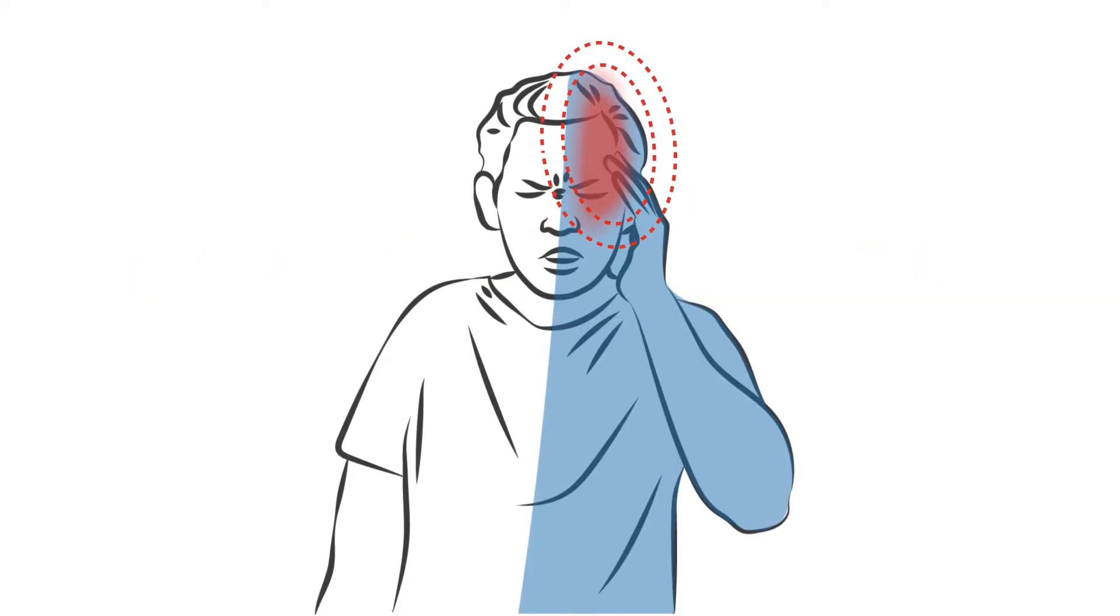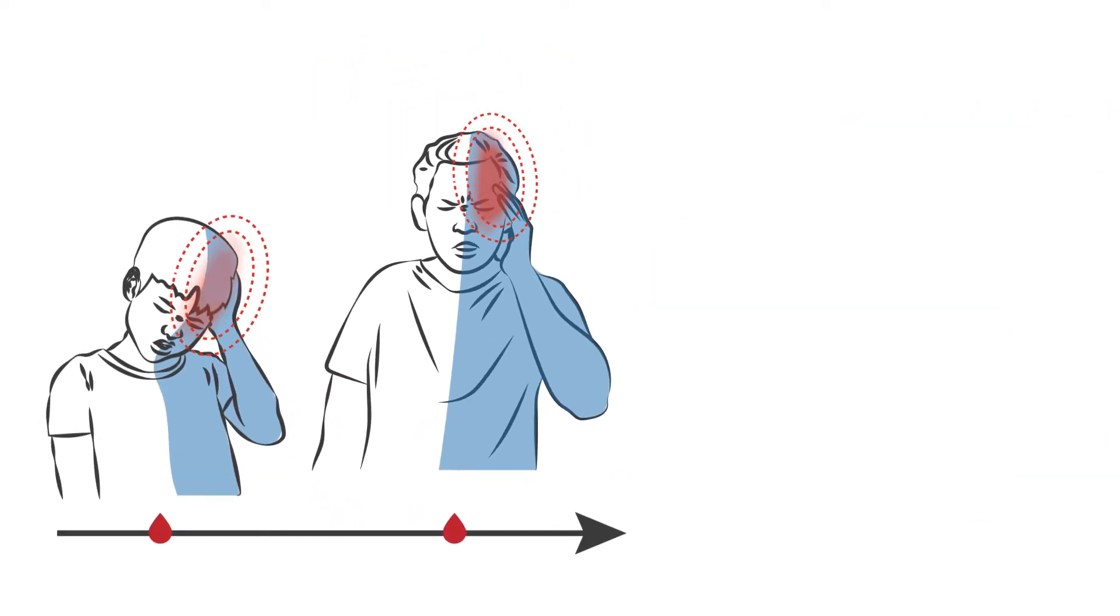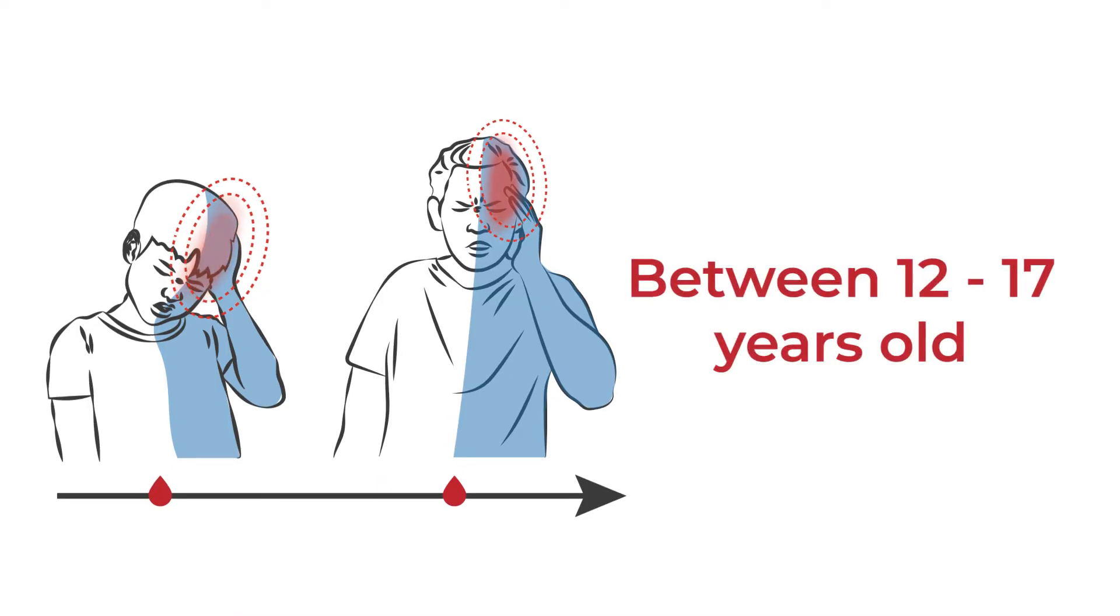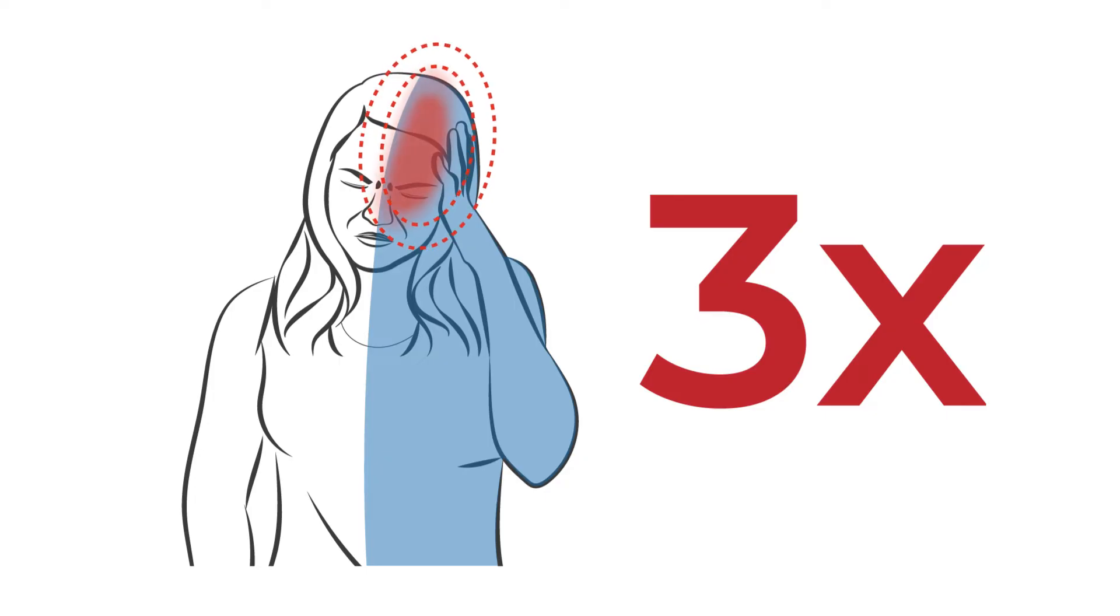Hemiplegic migraine is a rare type of migraine affecting around 800,000 people worldwide. The average age of onset is between 12 to 17 years old, and women are three times more likely to be diagnosed with this condition.